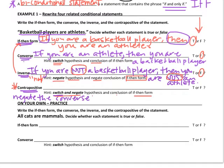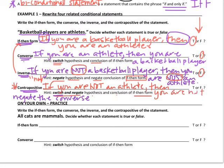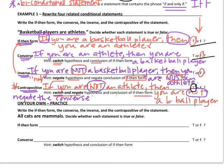Looking at the converse statement, the contrapositive is: if you are not an athlete, then you are not a basketball player. We negated both the hypothesis and the conclusion. If you're not an athlete, then of course you are not a basketball player — so that is a true statement. Each time you're writing a statement, you have to consider whether it's true or false, because that's part of the logic behind this lesson.